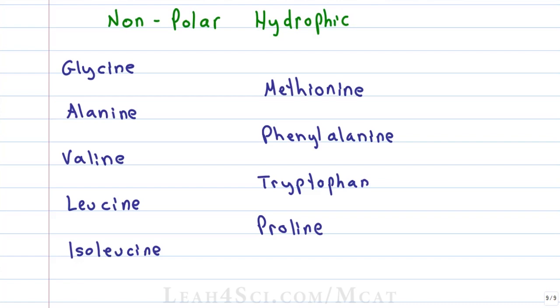alanine, valine, leucine, isoleucine, methionine, phenylalanine, tryptophan and proline. There are 2 more, cysteine and tyrosine that are polar hydrophobic but we'll discuss that with the polar amino acids in the next video.